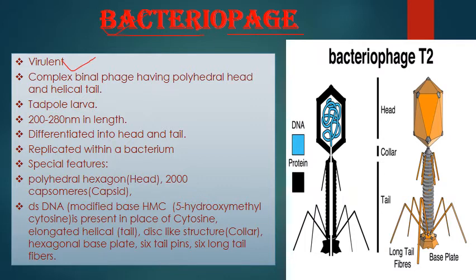Bacteriophages mostly cause disease and have complex binal symmetry — the head portion is polyhedral or icosahedral, and the tail is helical. Their shape is tadpole-shaped, like a tadpole or frog larva. The length is 200 to 280 nanometers, and one nanometer equals 10 to the power of minus 9 meters.